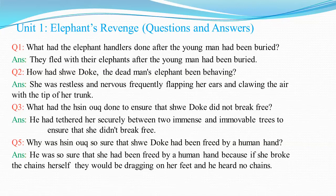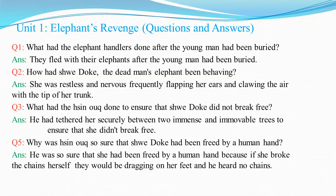The story is Revenge. There are 8 questions and answers and we will do 5. Question number 1: What had the elephant handlers done after the young man had been buried? The answer is they fled with their elephants after the young man had been buried. Question number 2: How had Joy Dog, the dead man's elephant, been behaving? The answer is she was restless and nervous, frequently flapping her ears and clawing the air with the tip of her trunk. Question number 3: What had the Hassanog done to ensure that Joy Dog did not break free? The answer is he had tethered her securely between two immense and immovable trees to ensure that she did not break free.